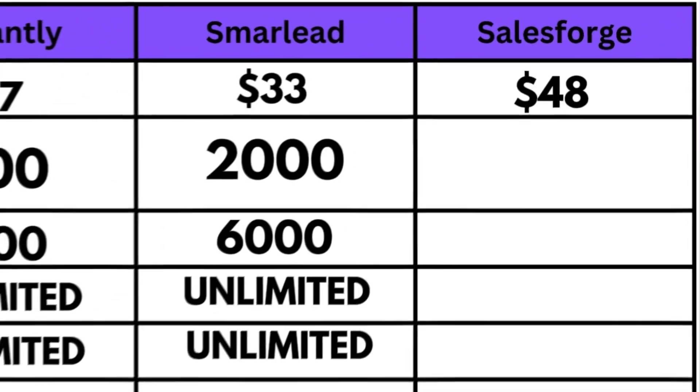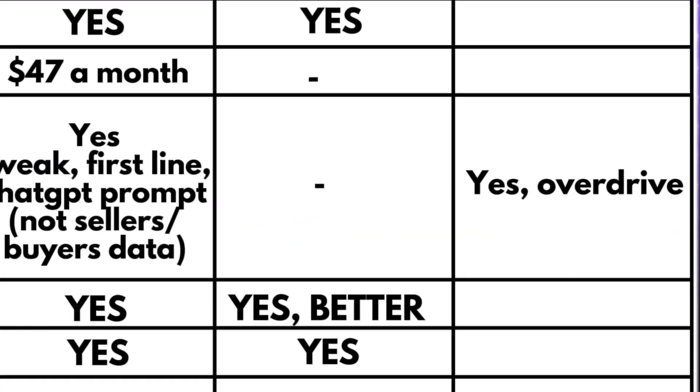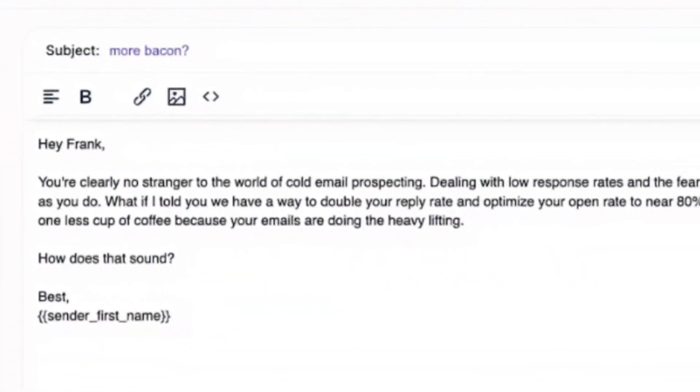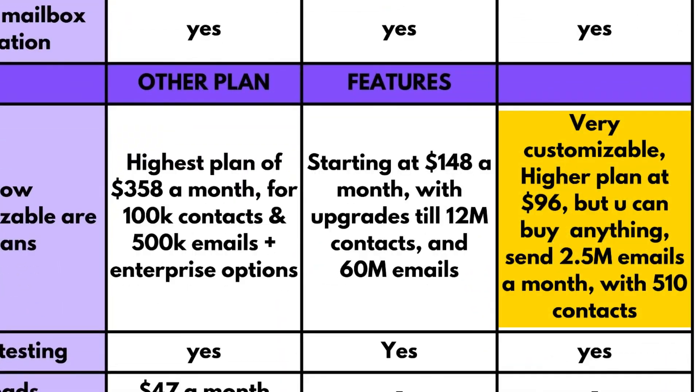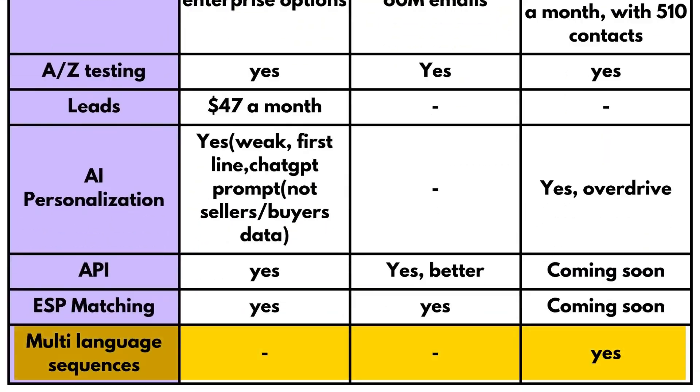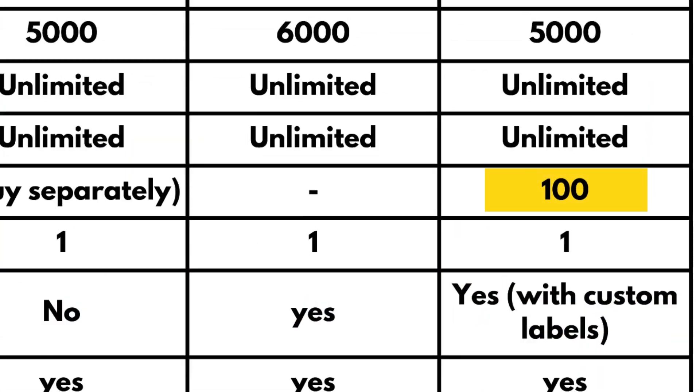Because of this, I want to quickly mention Salesforce as an alternative to both Instantly and Smartlead. Salesforce has a ton of cool features, even in its smallest Pro plan at $48 a month. You get an advanced AI personalization feature that uses sellers and buyers data to craft unique personalized emails at scale — not a simple ChatGPT prompt, but relevant data about your product mixed with data about your lead from their LinkedIn profile or website. You also get a seamless upgrade with super customizable plans, live support chat, multi-language sequences, auto-spintax, email validation, and a lot more to help you achieve an outstanding reply rate.